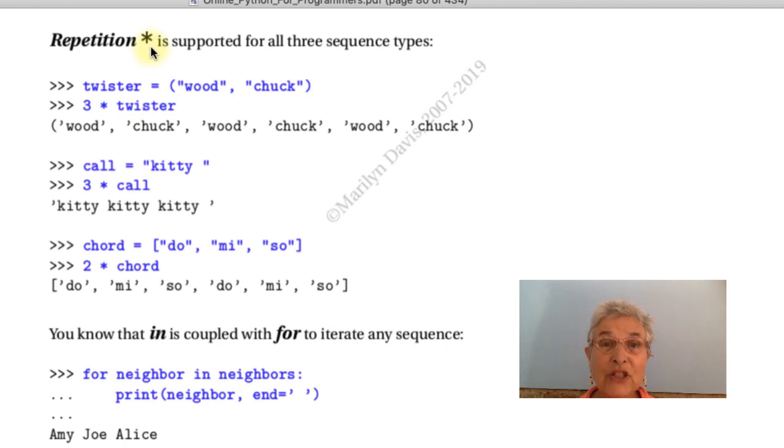Repetition, the multiplication sign, is supported for all three sequence types. Here we have woodchuck, a tuple. Three times that gives me woodchuck, woodchuck, woodchuck. Here we have a string, kitty with a space, so that when I do three times that, I get kitty, kitty, kitty. Here I have a chord. Two times that gives me two octaves of that chord.